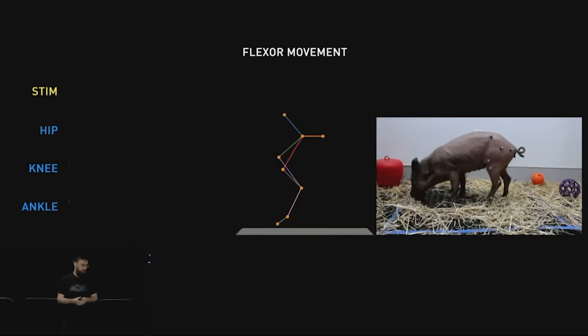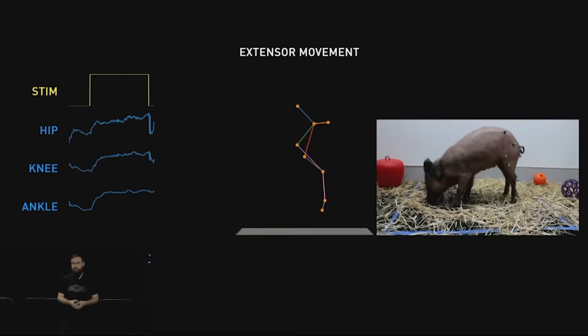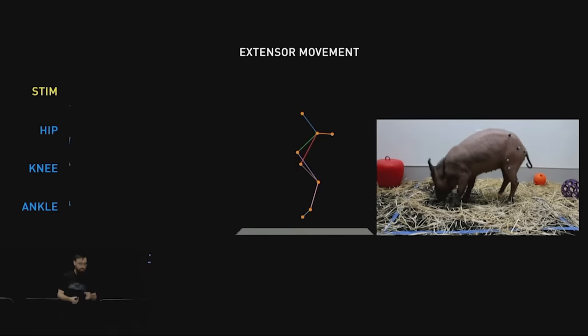Here's another electrode, which, when we stimulate, causes an extensor movement. This is actually a little harder to see because the leg is straightening and the hips are shifting. But if you look carefully, you can see how the leg is moving.